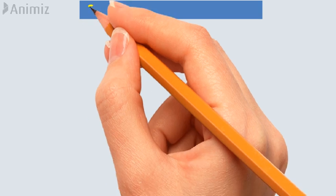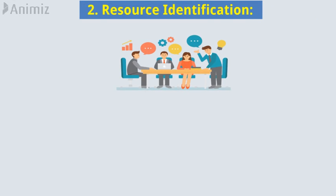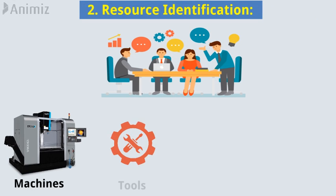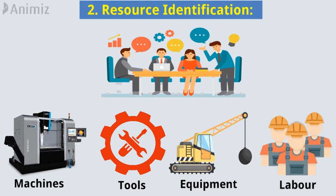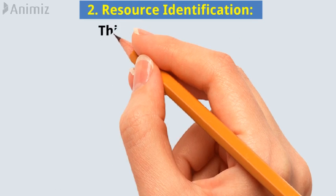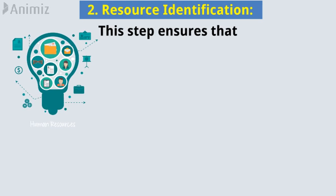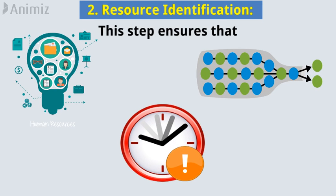2. Resource Identification: Process planners identify the machines, tools, equipment, and labor needed to execute each operation. This step ensures that the necessary resources are available when needed, preventing bottlenecks and delays.